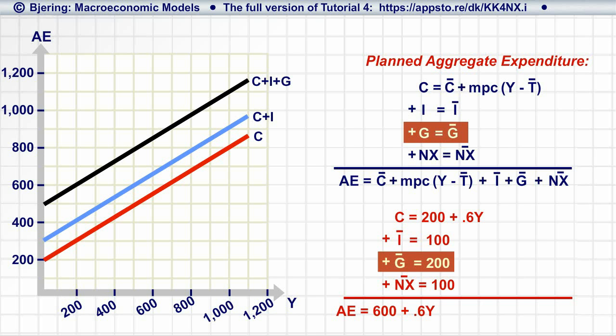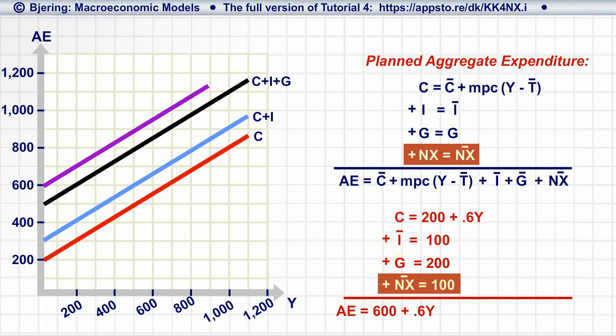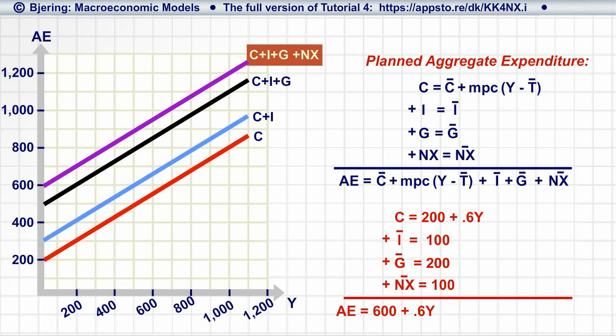As we do with exogenous net exports NX-bar. The purple line is the sum of the four components of planned aggregate expenditure. So the line is the planned aggregate expenditure function.